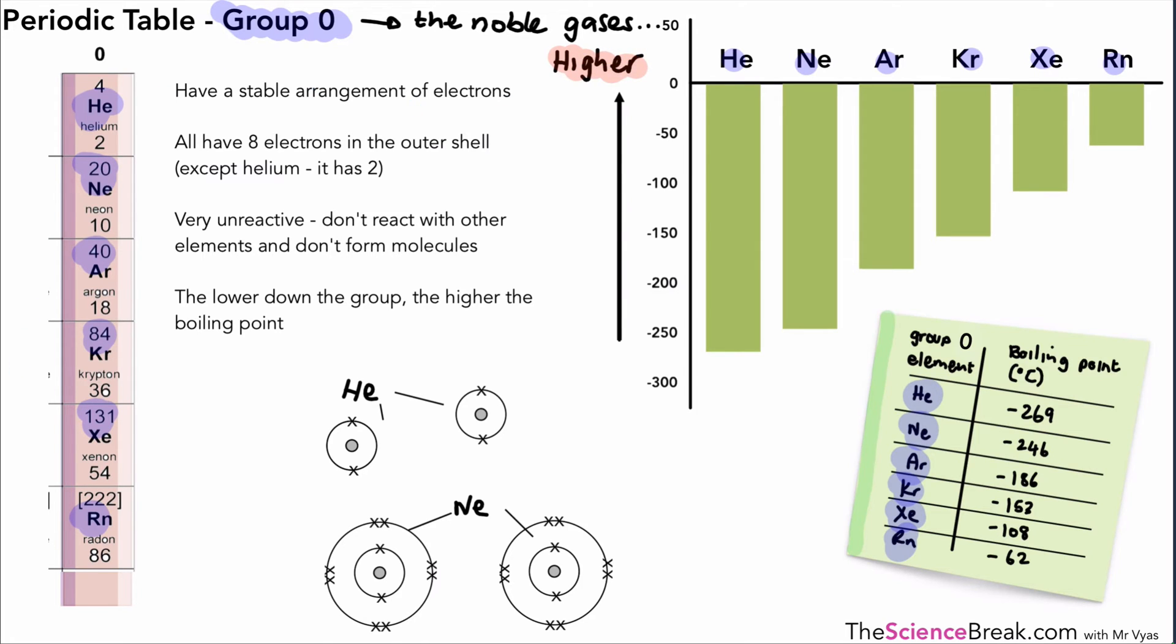Okay, so those are the key things we need to know about Group 0 on the periodic table: the fact that they're very unreactive, why they're unreactive, and the trend or the pattern in their boiling points. So a short video but important information nonetheless. Thank you for watching and I'll see you on the next one.